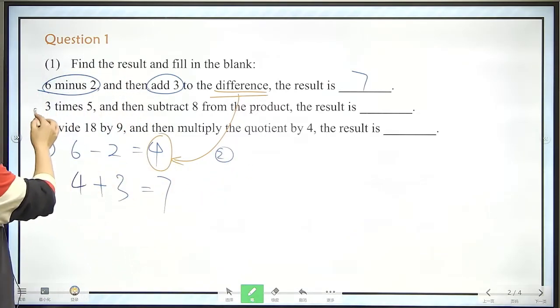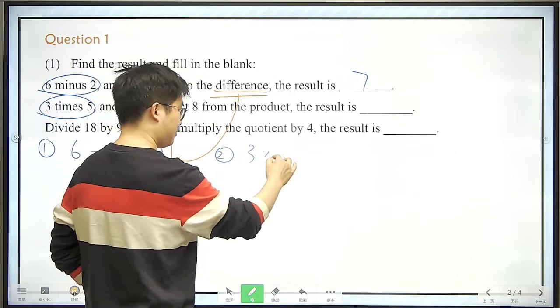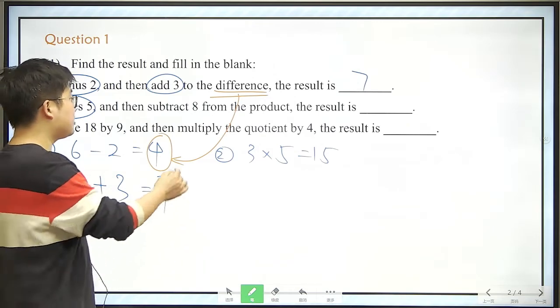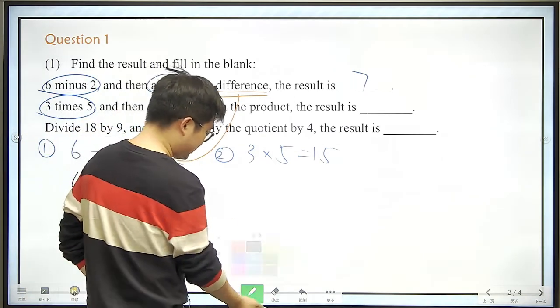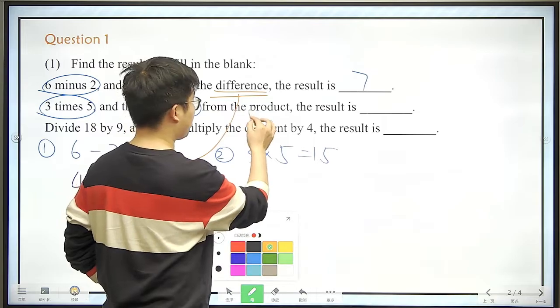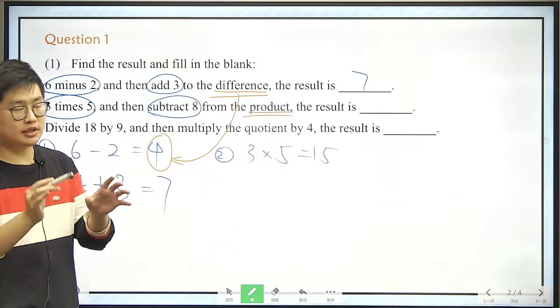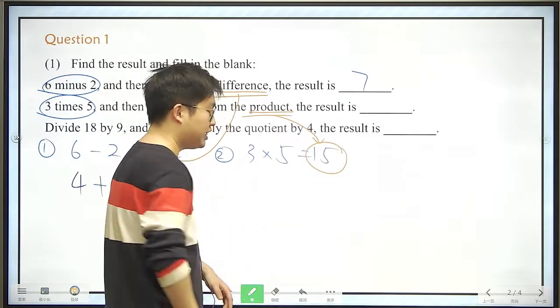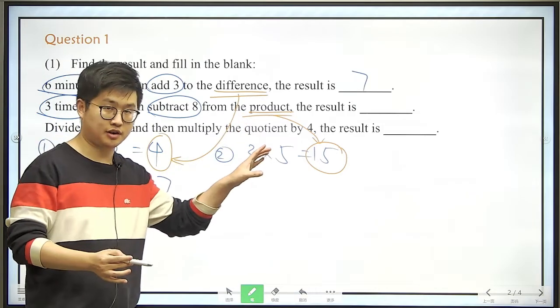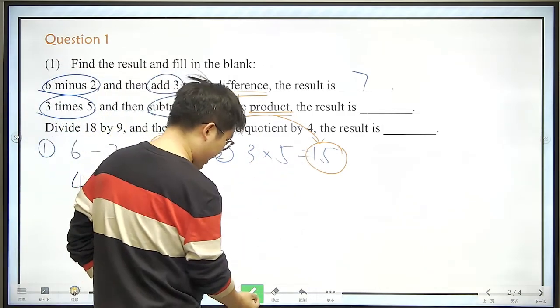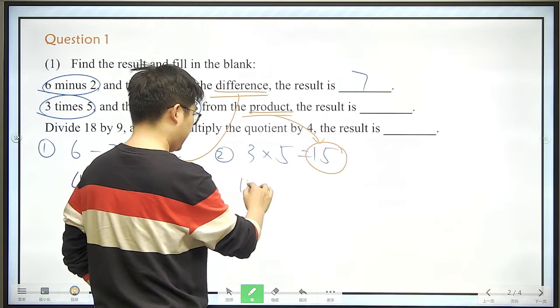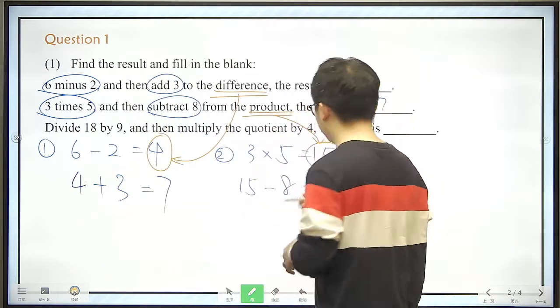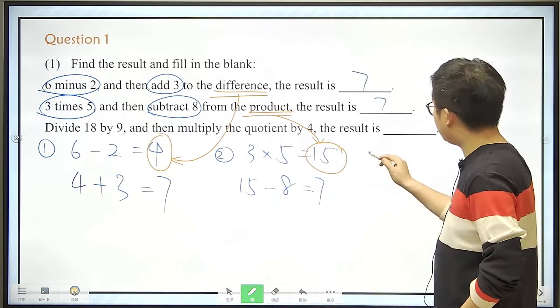We should 3 times 5, that is 15, and then subtract 8 from the product. Here comes another word, product. So what is product? Product is the result of a multiplication. Here is 15. 15 is the product. So we should subtract 8 from 15, that is 15 minus 8. The answer is also 7. This is just the coincidence.